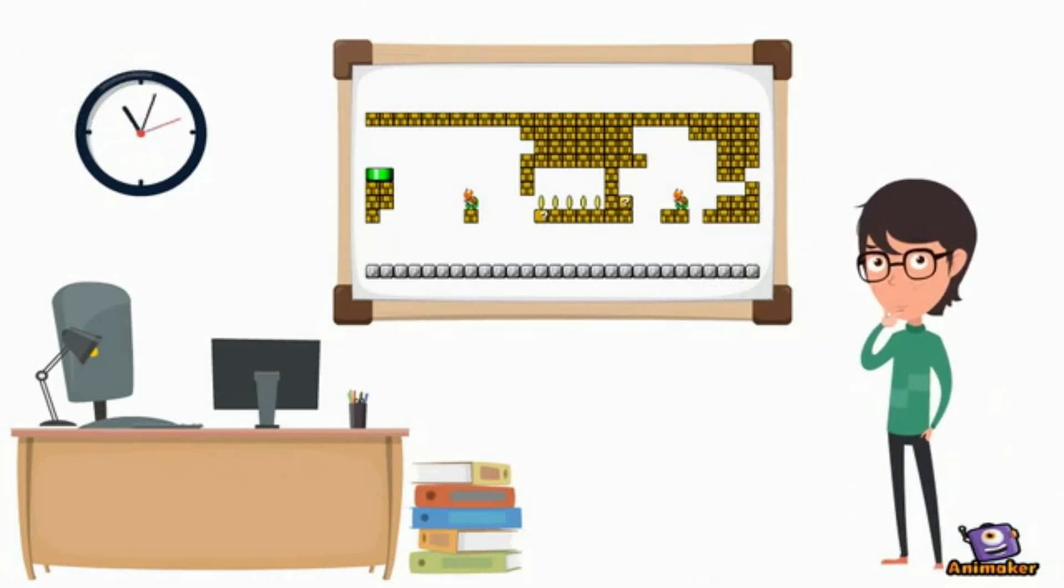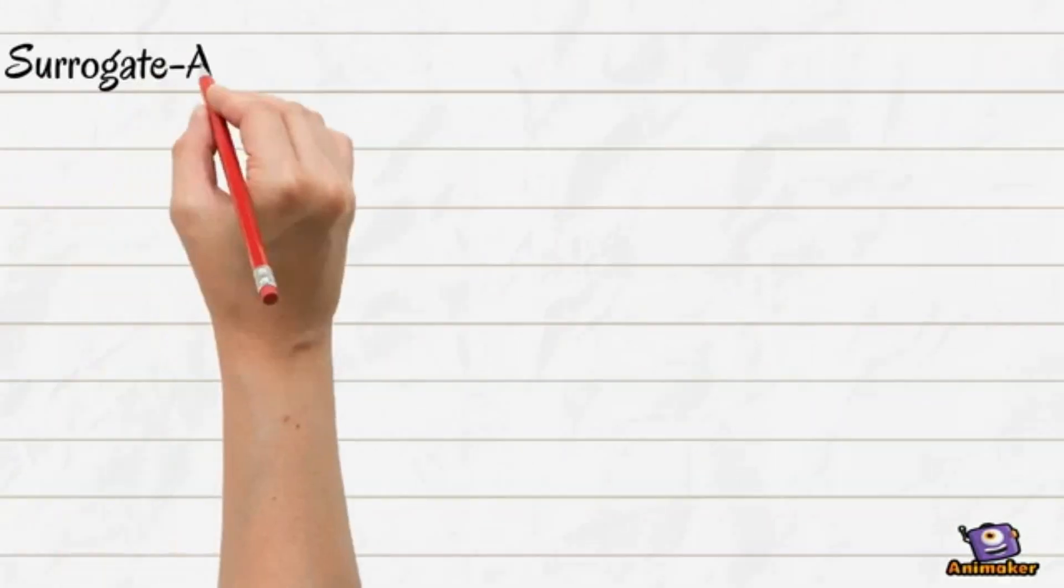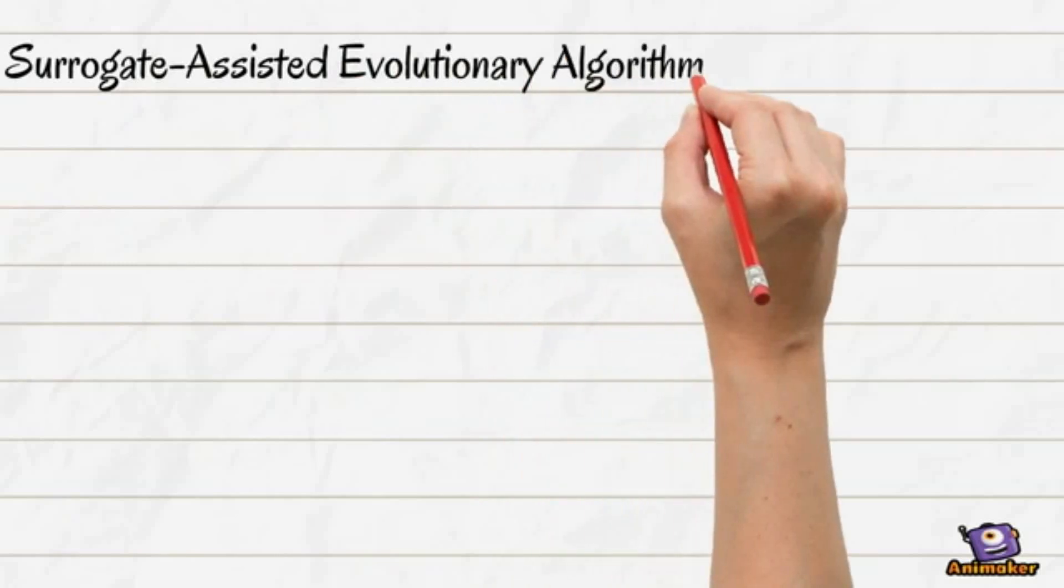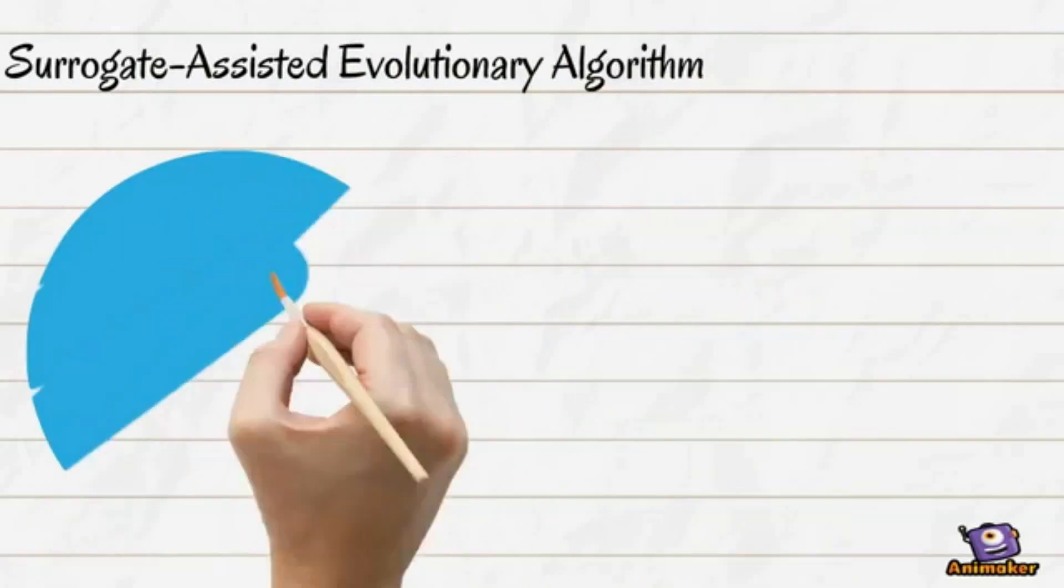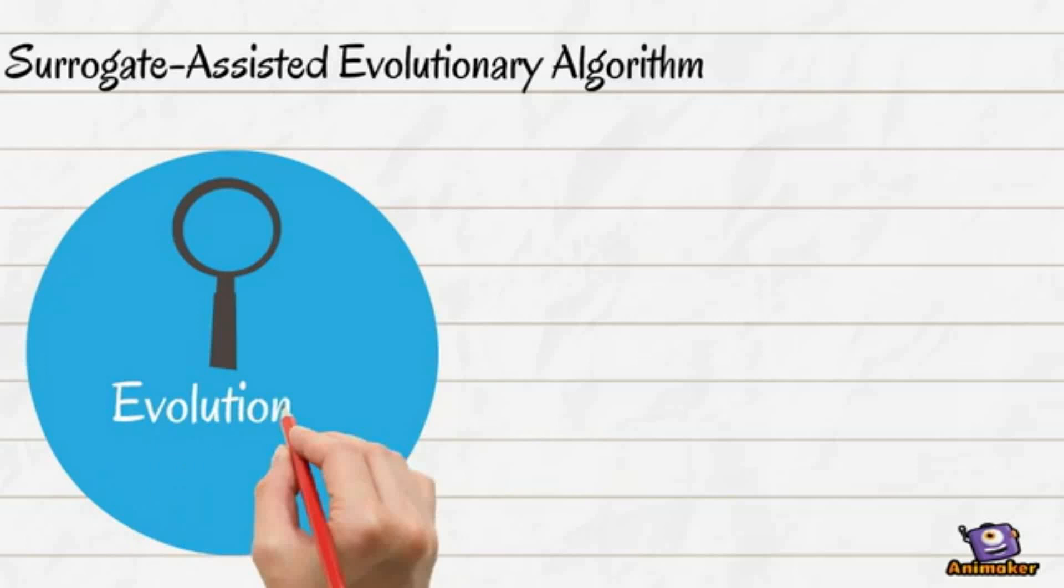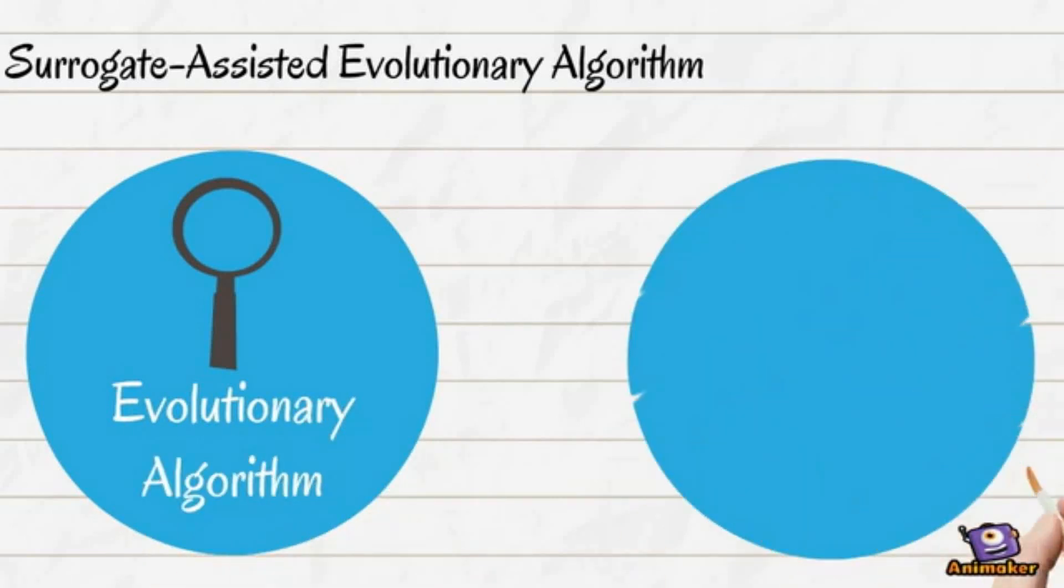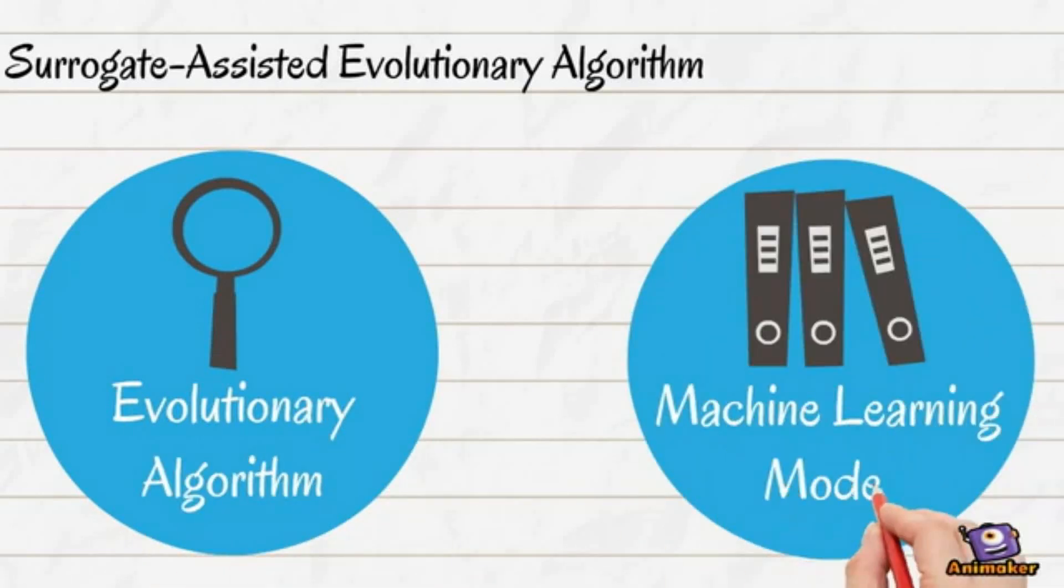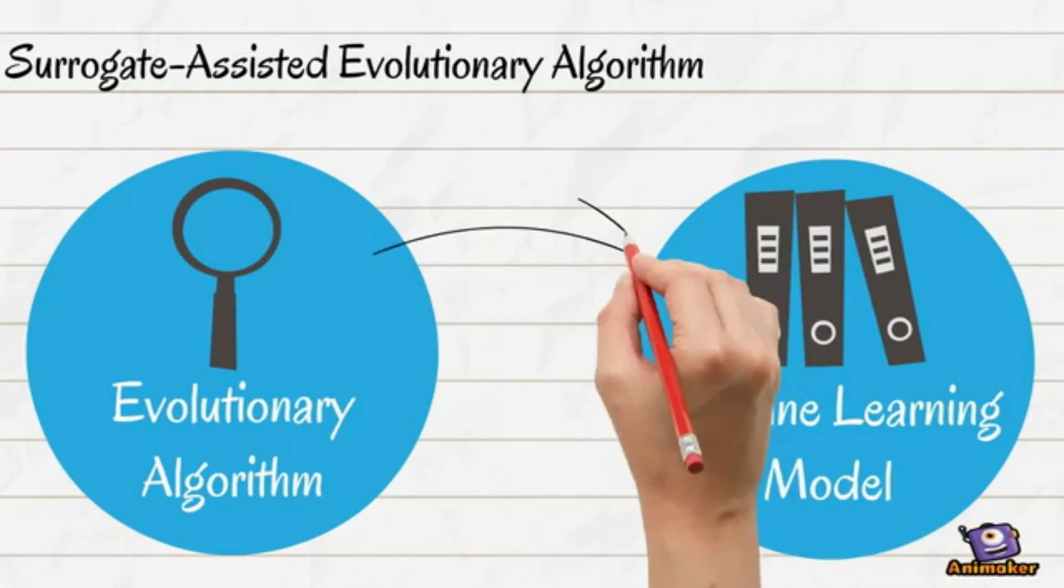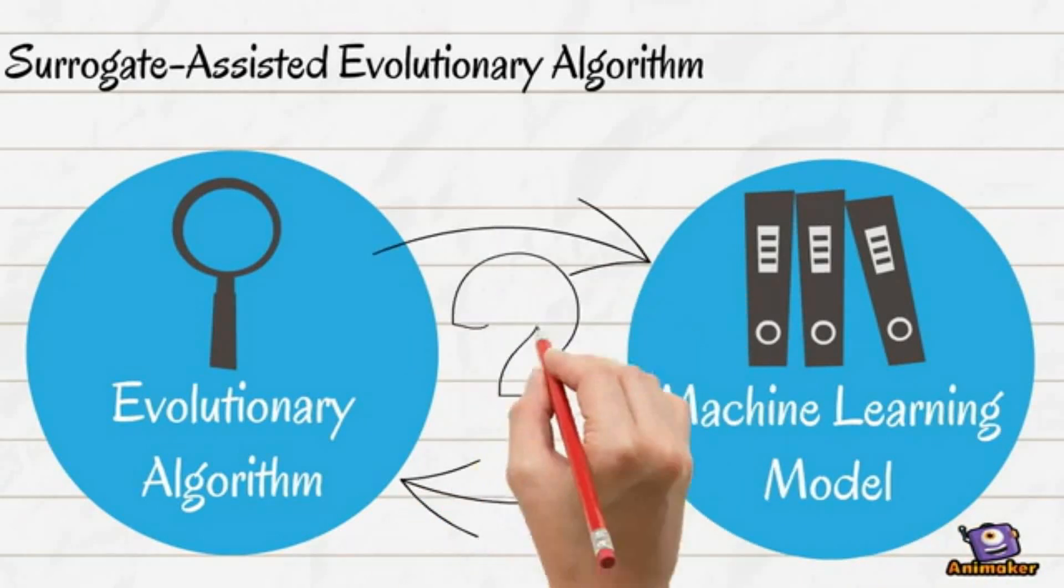But I think I've found a solution. Surrogate-assisted evolutionary algorithms are evolutionary algorithms, but they seek to reduce the number of fitness function evaluations by using information from machine learning models. They differ mainly in the way these two components interact.